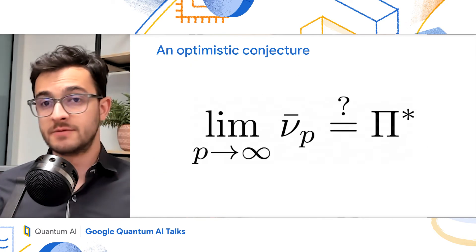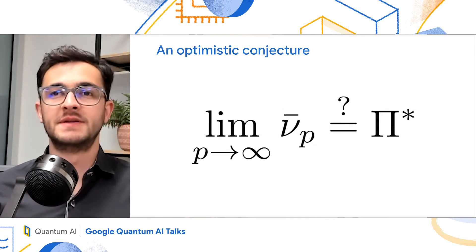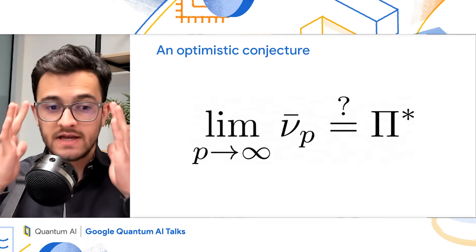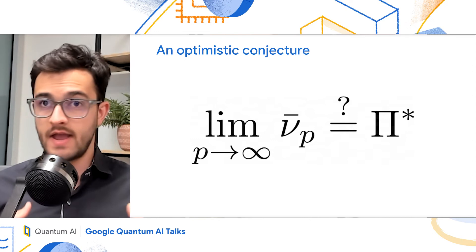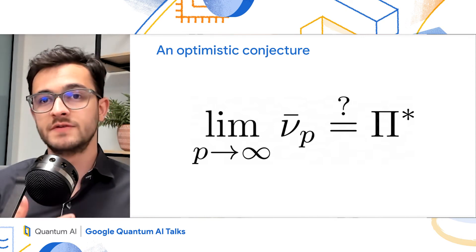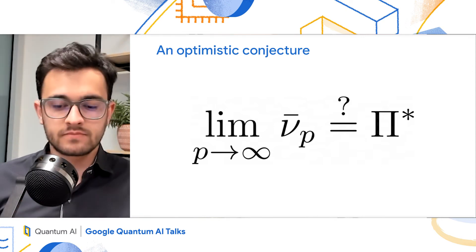So given the numerics, we make the optimistic conjecture that as you take p to infinity, nu_p bar approaches the Parisi value. Or in other words, that iteration that I showed previously is the way to compute the Parisi value.